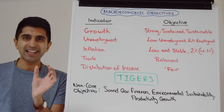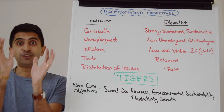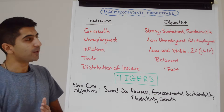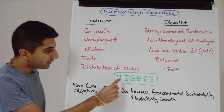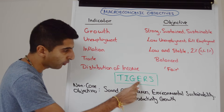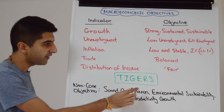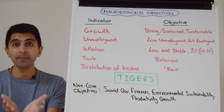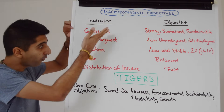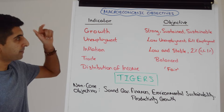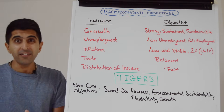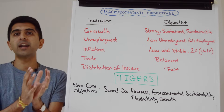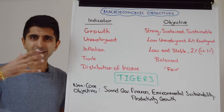To remember the macro indicators and their objectives, just remember TIGERS — the roar of the tigers. That stands for Trade, Inflation, Growth, Employment, and Redistribution of income — there are our five. But also remember the S: S is for stability. Macroeconomics is all about achieving macroeconomic stability, meaning these four objectives — growth, unemployment, inflation, and trade — all being met at the same time. These are the four big ones we need, and if those four objectives are being met simultaneously, we'll have a stable economy.